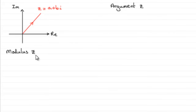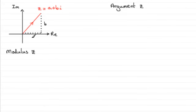What do we mean by the modulus of the complex number z? Well, it refers to the length of the line here. To work out that length, we think of a right angle triangle where this length up here is b and this length across here is a. So for the modulus of z, by using Pythagoras' theorem, we know the hypotenuse squared equals the sum of the squares of the other two shorter sides. To get that length, we square root it, giving us the square root of a squared plus b squared.